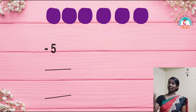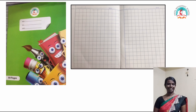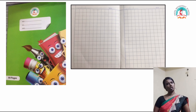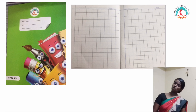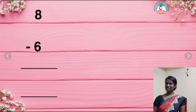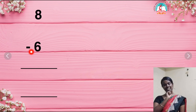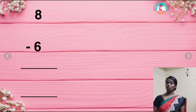Now children, open your Max classwork. Take out your Max classwork. Take a fresh page children. The first one children, can you see the numbers? Write the numbers in your notebook. We have the numbers 8 and 6. So write the number 8 and 6. Write the subtraction sign. Draw 2 lines below 6.